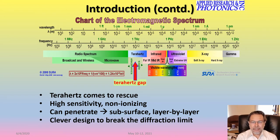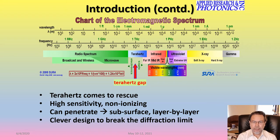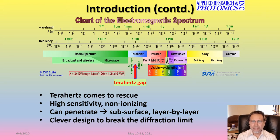Let me introduce terahertz radiation. The terahertz radiation, or T-ray, lies in between far infrared and microwave, because there is overlap with far infrared. The T-ray or terahertz radiation is also known as millimeter wave, also known as far IR, or back wave. There is overlap with far IR and it is close to microwave.